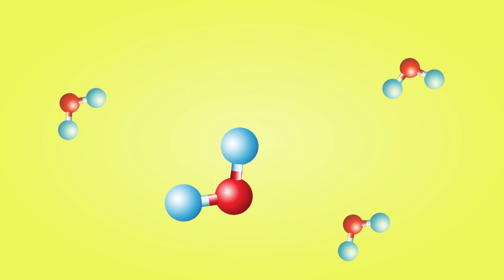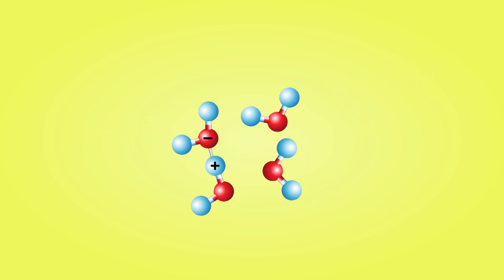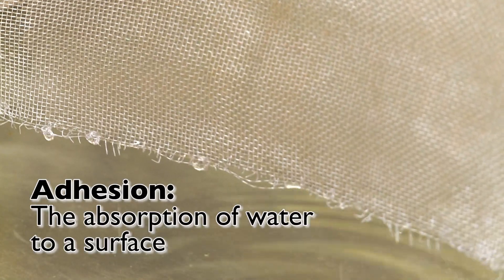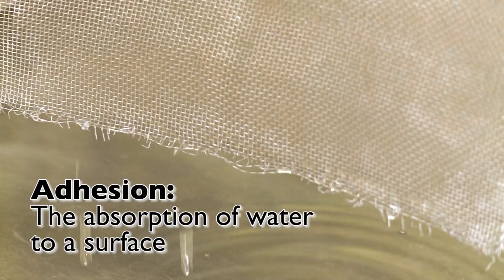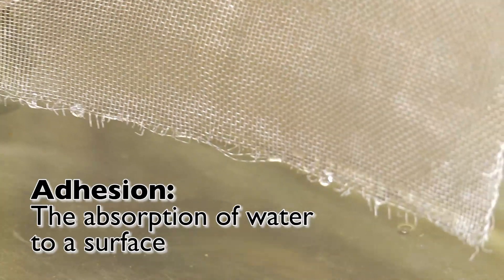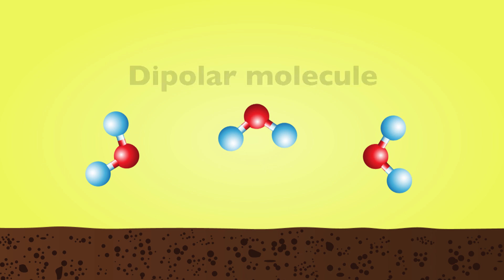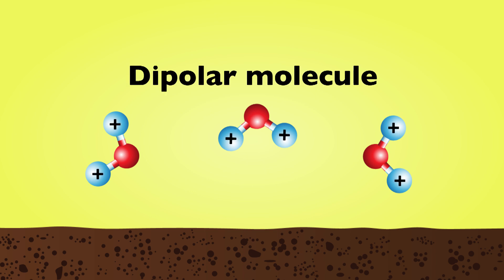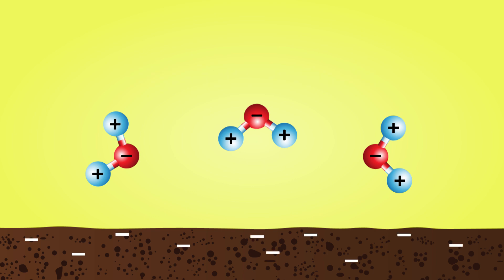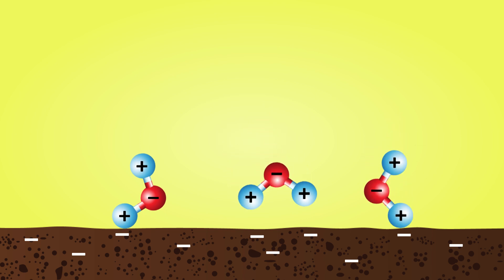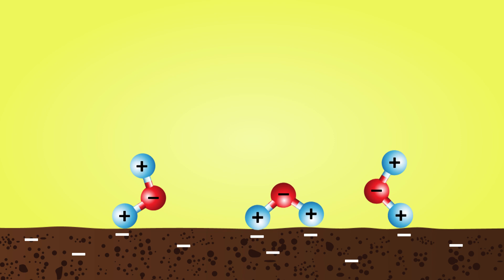Water molecules actually stick together. One molecule attaches to another molecule through a process called hydrogen bonding. Now, adhesion is the absorption of the water molecule to the sides of a container — it could be the absorption of water to soil through a process called the matrix potential. The water molecule is a dipolar molecule with a partial positive side and a partial negative side. The charge on soils is negative, so the positive charges on the water molecule are going to absorb to the negative charges on the soil through the matrix potential.